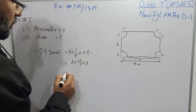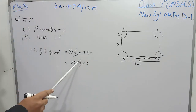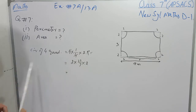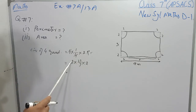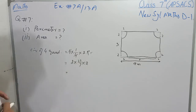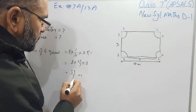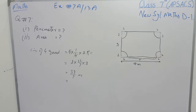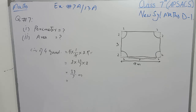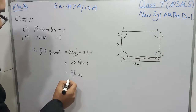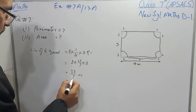Now we multiply 2 multiplied by 22 multiplied by 2, which gives 88 over 7 meters. Dividing 88 by 7 gives 12.57 meters. That is the circumference of the 4 quadrants.